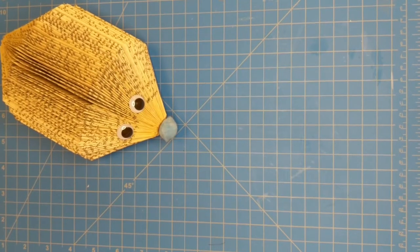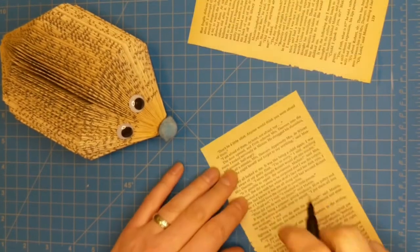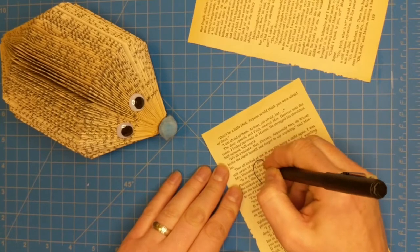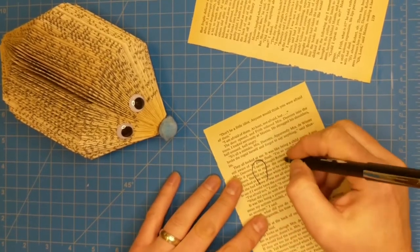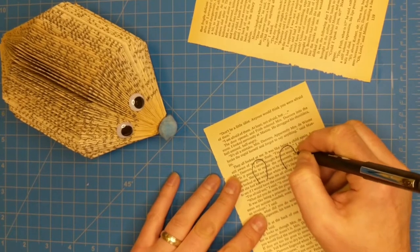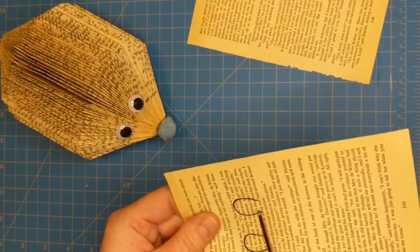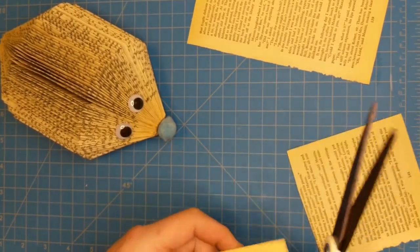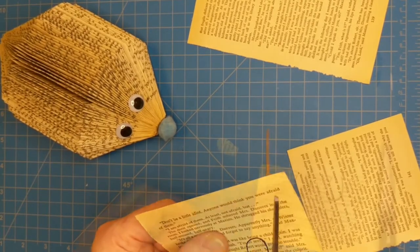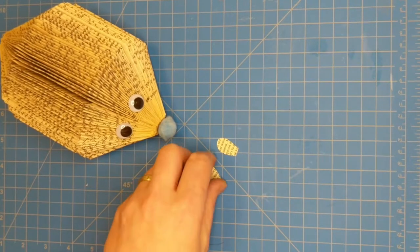It's time to make the ears. This is where those extra pages come in. Make a sort of horseshoe shape. And then cut those out. Now if you want them to be exactly the same, you could fold the paper in half. There's our rough ears.